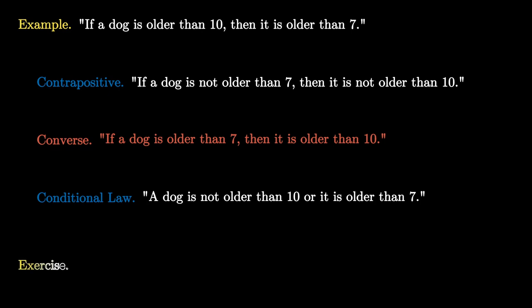Try to do this same thing with this exercise: 'if a number is even, it is divisible by 2.' Write the contrapositive, the converse, and write this in terms of the conditional law.